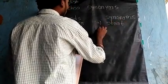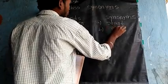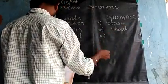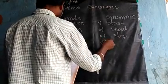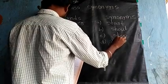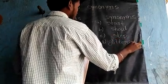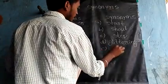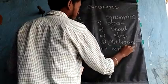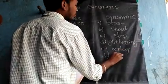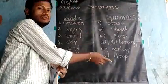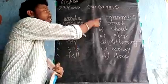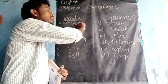The options given are: A — start, B — shout, C — stop, D — glittering, E — replete, F — drop. So on one side words are given, and on the other side synonymous words are given. We match the same meaning words.